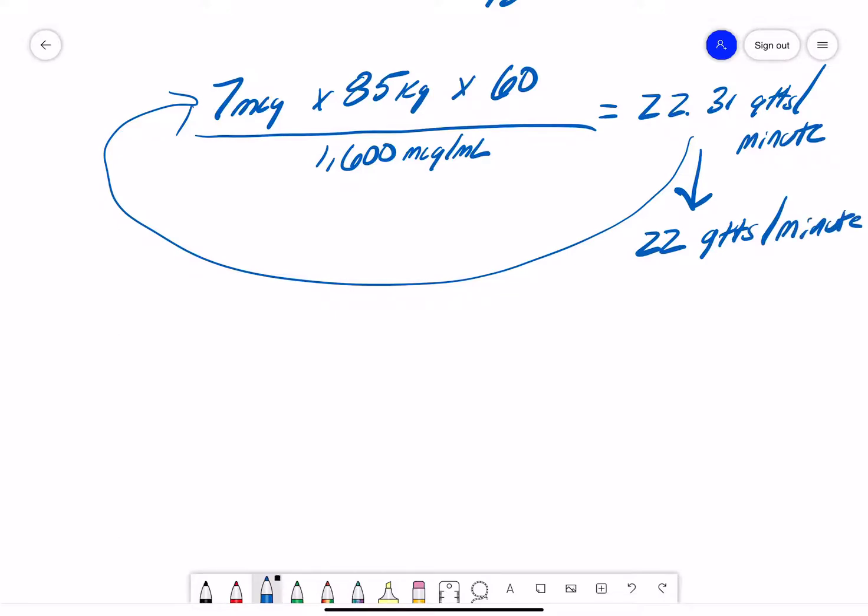So that is the formula for dopamine. The dose that's ordered, multiplied by the patient's weight in kilos, multiplied by 60, divided by the drug's concentration.